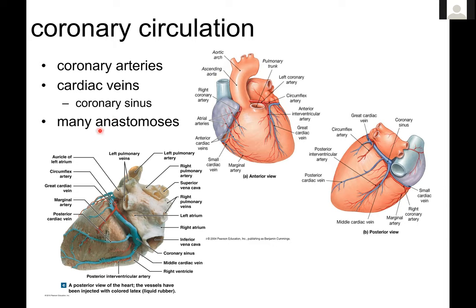One thing to note about coronary circulation is that it has a lot of anastomoses. An anastomosis is a place where two vessels meet up and make a loop — a loop that's not a capillary bed. Ordinarily, the flow of blood goes heart → aorta → increasingly small arteries and arterioles → capillary network → venule → small vein → large vein → back to either the superior or inferior vena cava. That's the regular standard route.